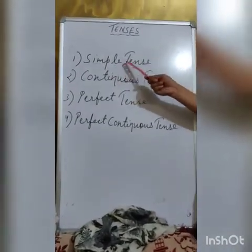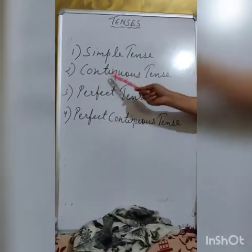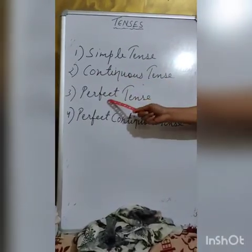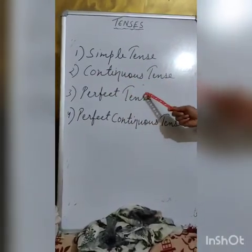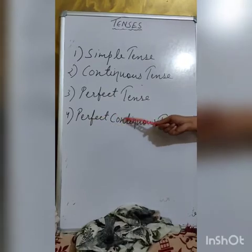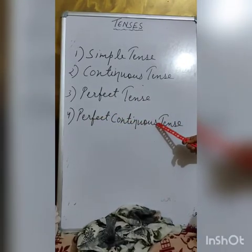The tenses are further divided into four forms as well. First is simple tense. Second is continuous tense. Third is perfect tense. And the fourth is perfect continuous tense.